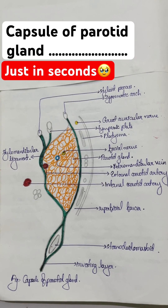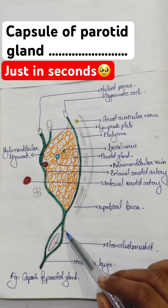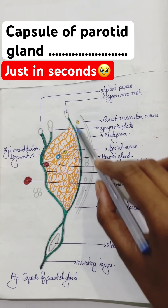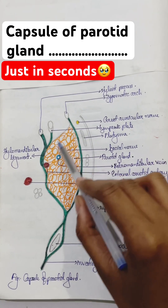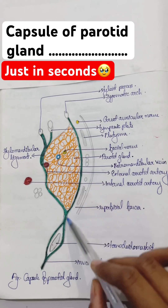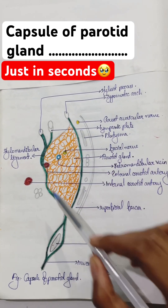The capsule is formed by the investing layer of deep cervical fascia which splits and encloses the parotid gland. This is the parotid gland and this is the covering or the capsule.